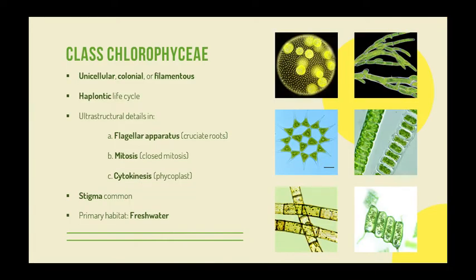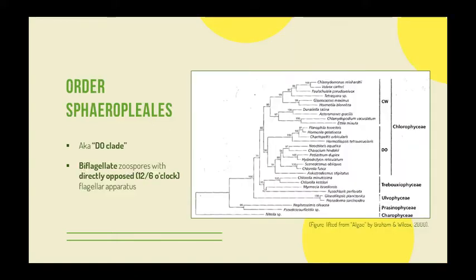P. boryanum is a chlorophycean. Shown here are the unifying characteristics of chlorophyceans, of which the most important are the ultra-structural details of the flagellar apparatus with cruciately arranged microtubular roots, closed mitosis where chromosomes divide within an intact cell nucleus, and cytokinesis mediated by a microtubular structure called phycoplast. Majority of chlorophyceans are grouped into either the CW clade, which have a clockwise position of flagella, and the DO clade, which have directly opposed flagella. The Pediastrum genus emerged from the order Sphaeropleales, also known as the DO clade.